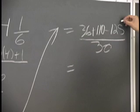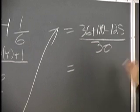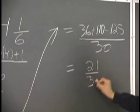146 minus 125 is 21, so we get 21 thirtieths.